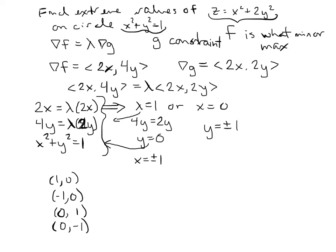Now we've got to figure out which is the biggest and which is the smallest according to our function, our original function. So if we take 1, 0 and plug it into this original function, it looks like we get 1. If we plug in negative 1, 0, yep, the same, we get 1. If we plug in 0, 1, we're going to get 2. And if we plug in 0, negative 1, we're going to get 2.